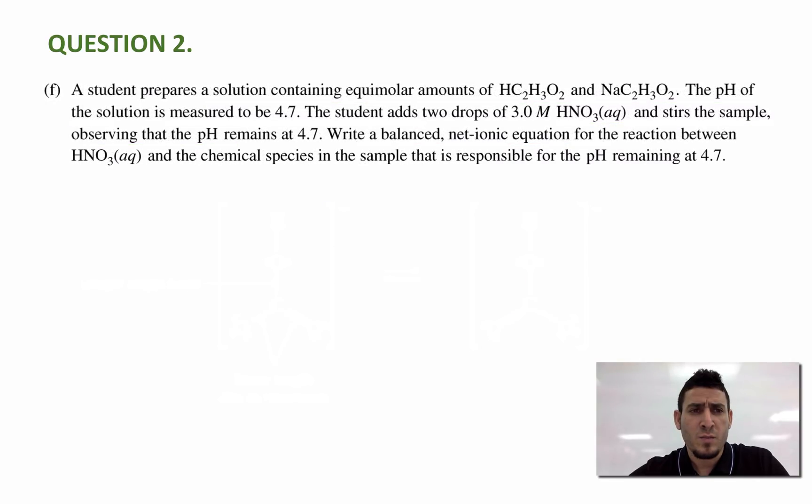Let's discuss now the last part in this question. It says, a student prepares a solution containing equimolar amounts of acetic acid and sodium acetate. The pH of the solution is measured to be 4.7. The student adds two drops of 3 molar nitric acid, aqueous, and stirs the sample,